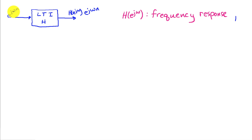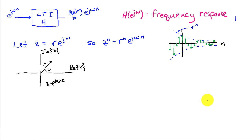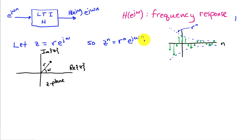Recall that the frequency response was defined by applying a complex sinusoid e^{jωn} as the input to our linear time-invariant system, and the output is just the complex sinusoid at the same frequency times the frequency response H(e^{jω}). We're going to generalize this input by defining a complex number z with magnitude r and phase ω, so we can write z = r·e^{jω}. A signal z^n is then r^n · e^{jωn}.